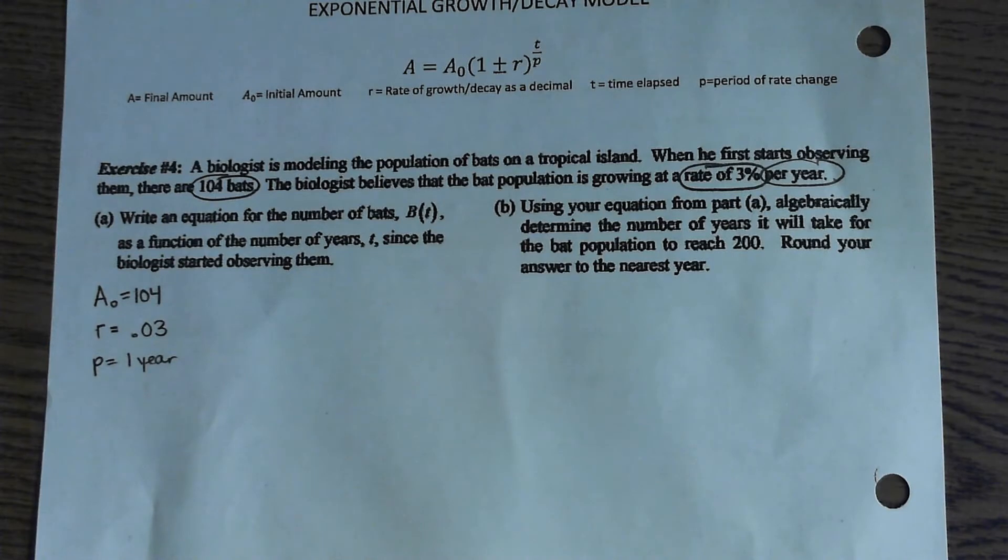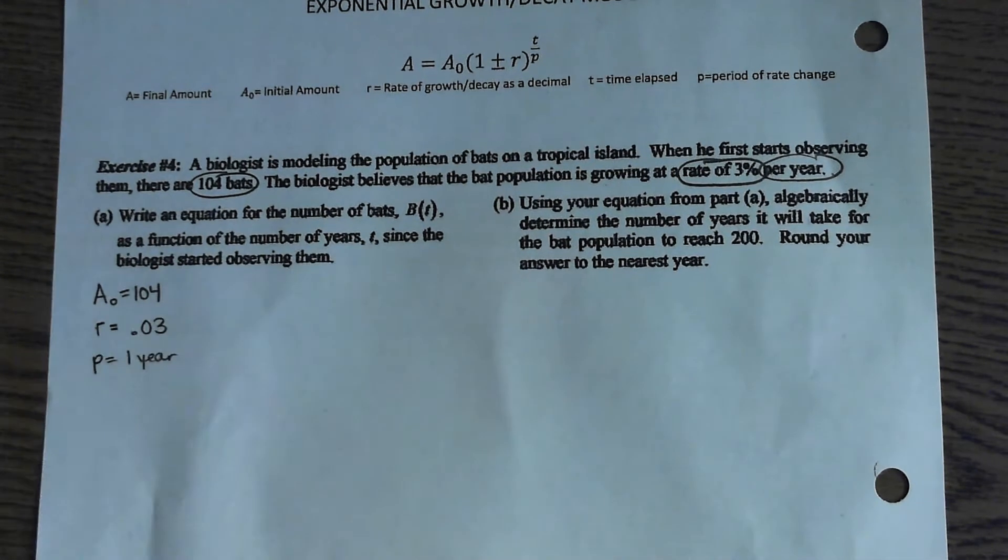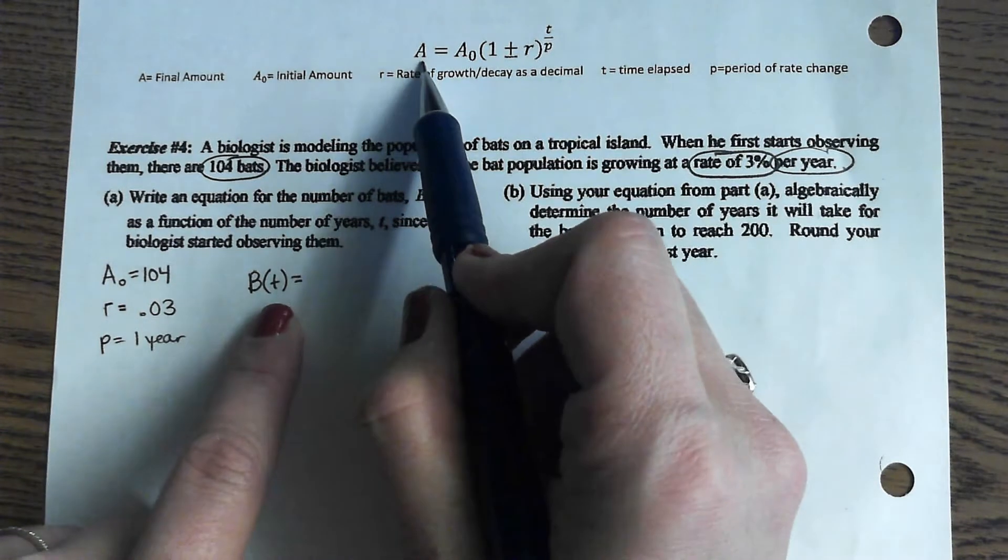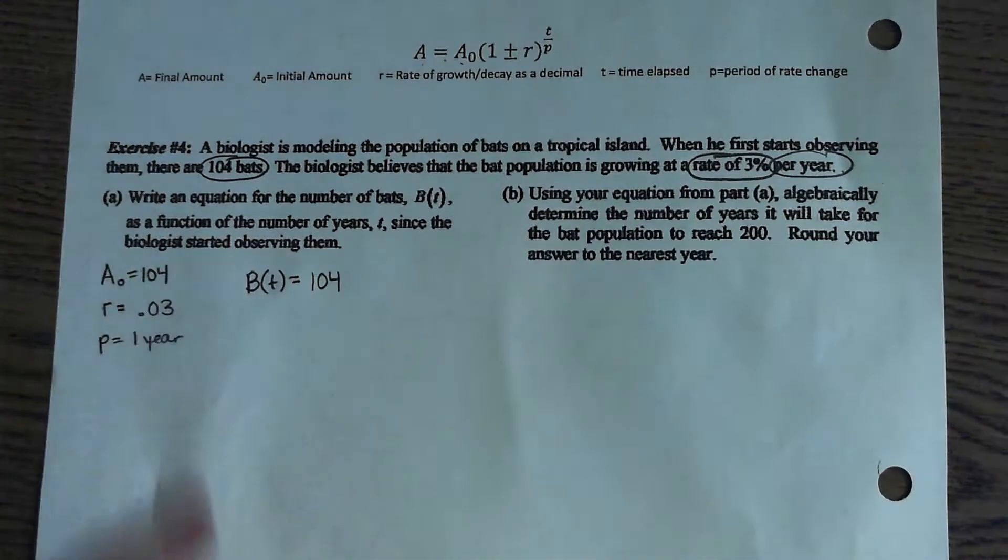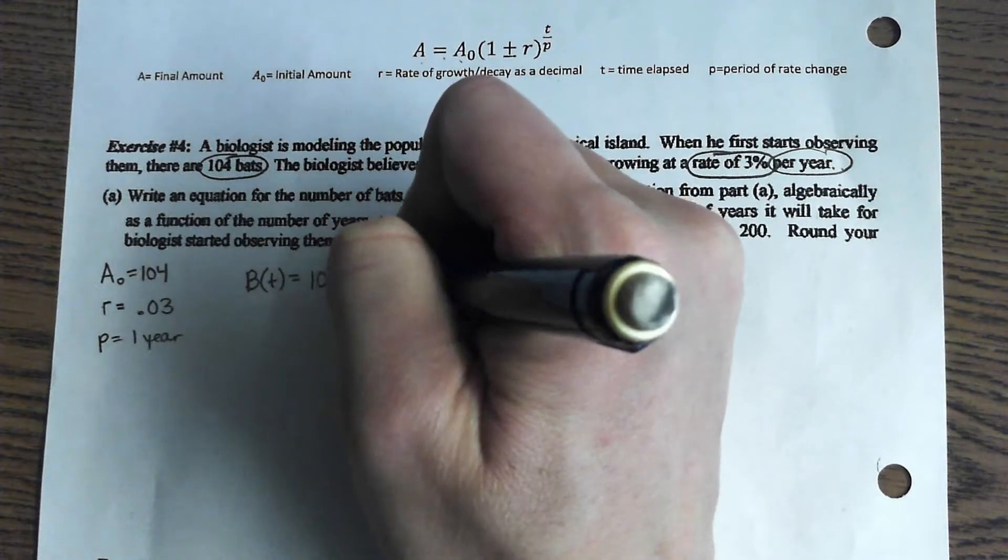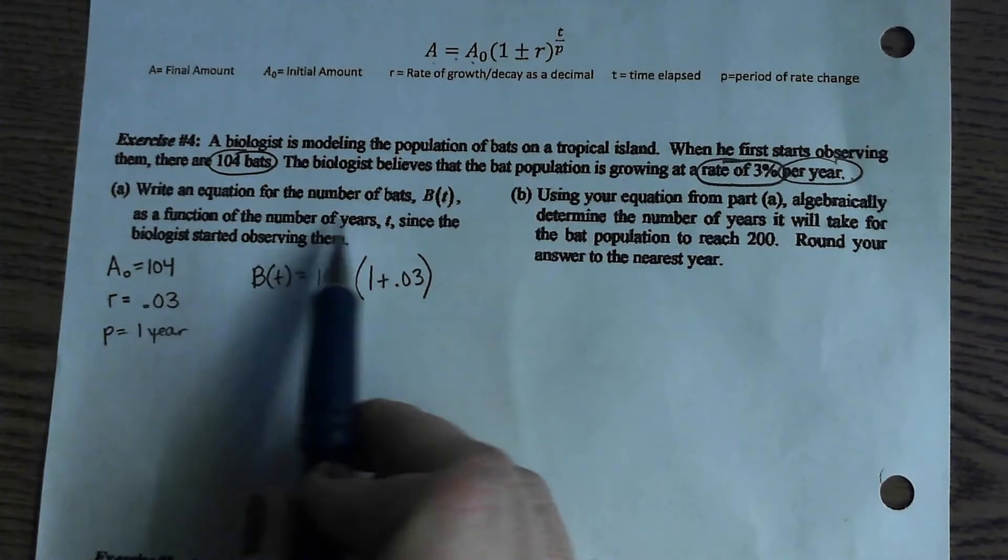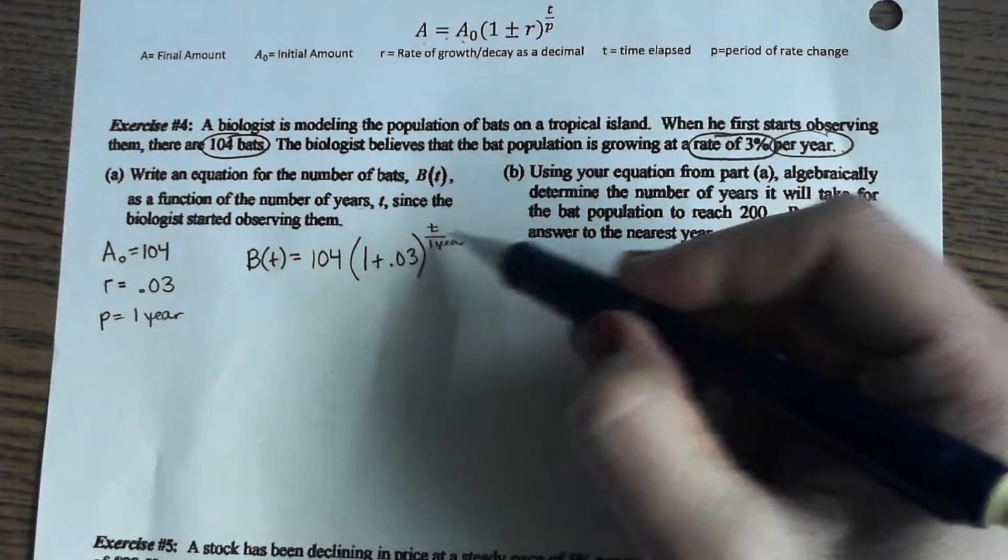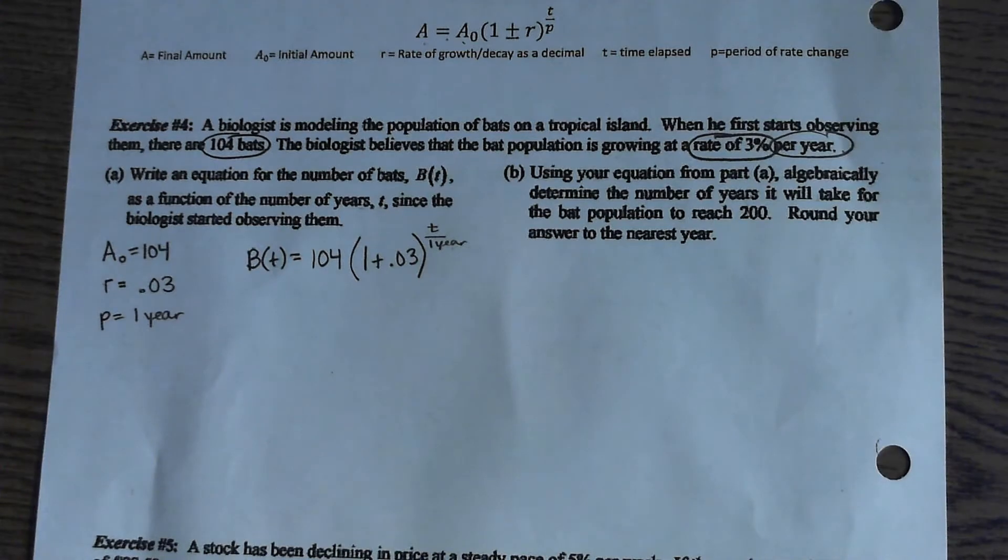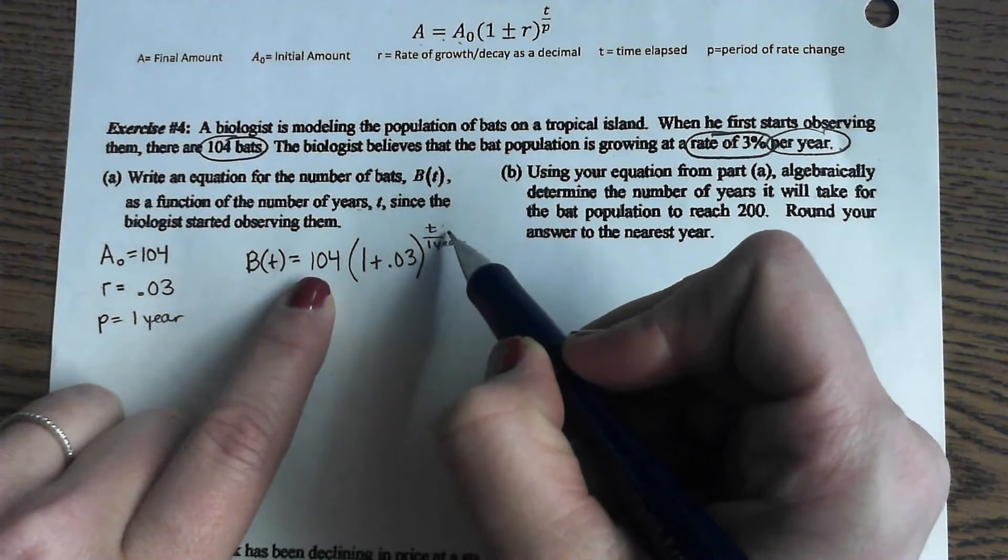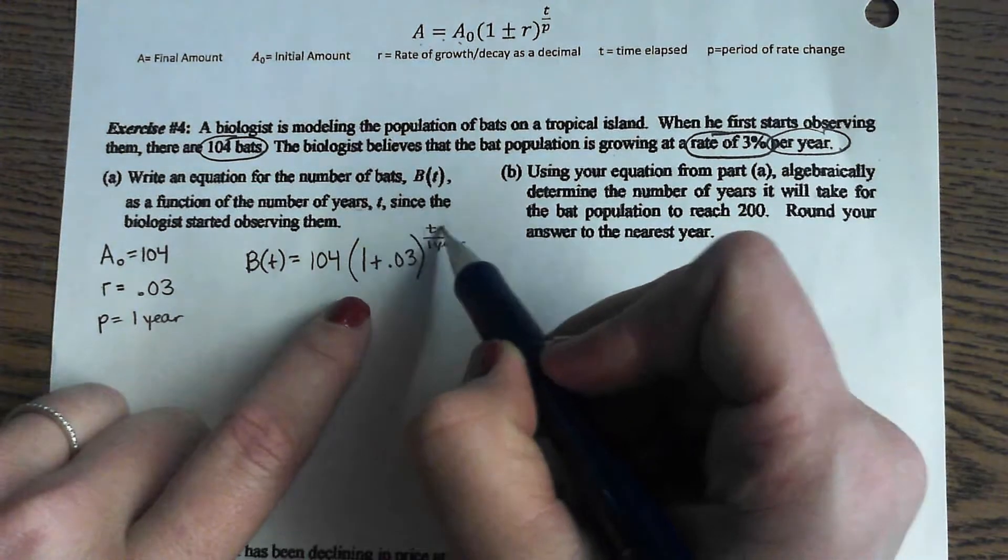So they want us to write an equation for the number of bats B of T so that's our final number of bats as a function of the number of years T since the biologist started observing them. So, we're going to get the number of bats T, so that's kind of like my final amount, equals my initial amount which is 104, parentheses, 1 was this growing or shrinking? Growing, plus 0.03 and we're doing it as a function of the number of years T over one year. Since T is in years and 1 is in years already we're good there we don't have any changing of units to deal with. So, that equation, if we plug in 5 years it'll tell us what the population has grown to after 5 years of growth. If we plug in 10 years we'll figure out what that is.